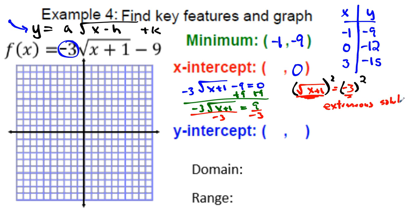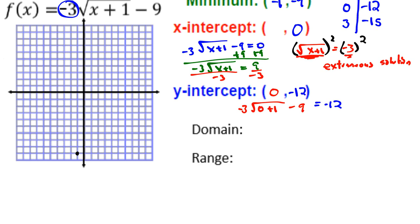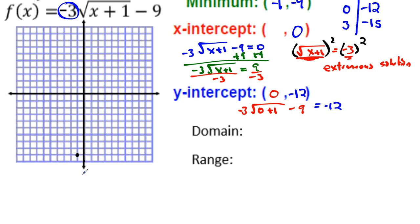Since the x-intercept is extraneous, there is none. For the y-intercept, plug x = 0: −3√(0 + 1) − 9 = −3(1) − 9 = −12. So the y-intercept is (0, −12). Plotting: vertex at (−1, −9), then (0, −12), and (3, −15). This graph opens downward and extends off the grid.